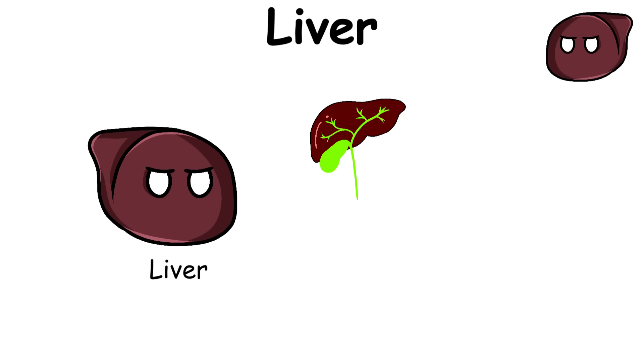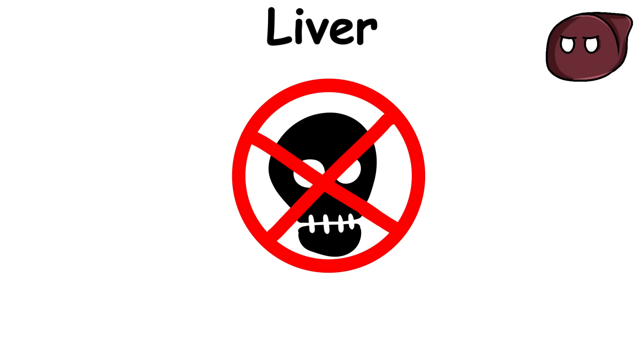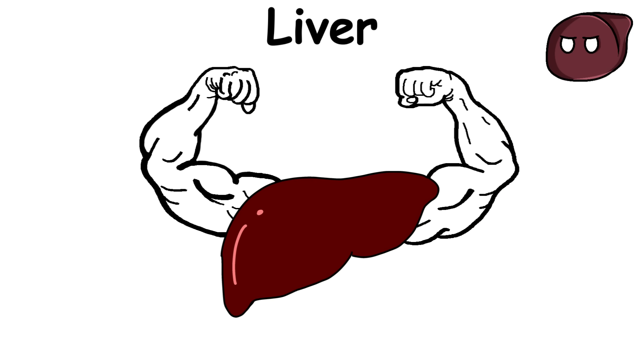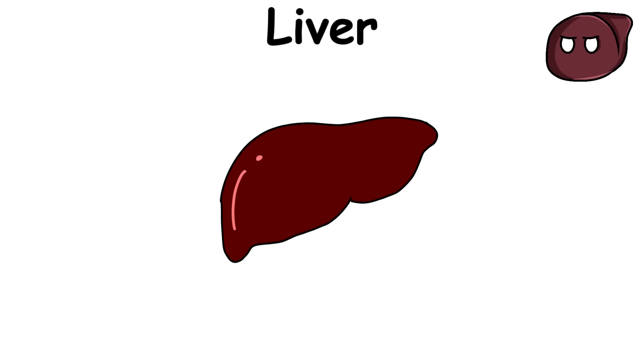The liver also has other important functions including bile production for digestion, protein production for blood clotting, helping the body filter out toxic substances, and helping the body's immune system. The liver is also a powerful organ that can heal itself back to its original size even if 75% were cut out.